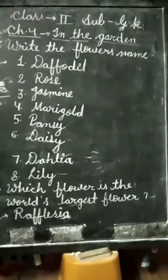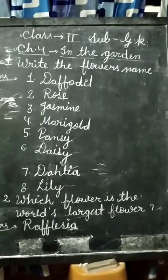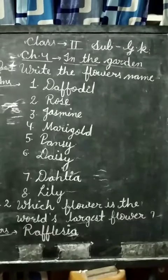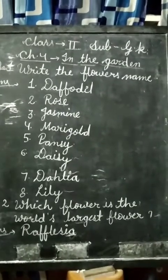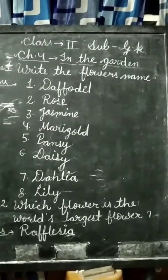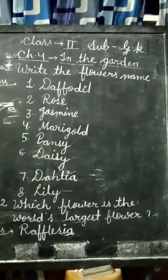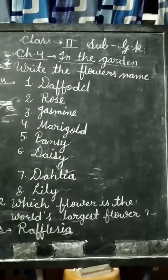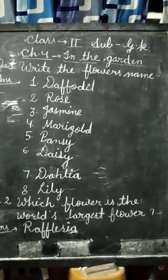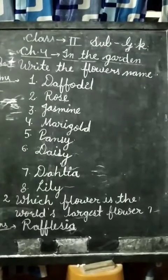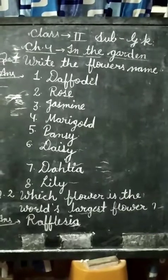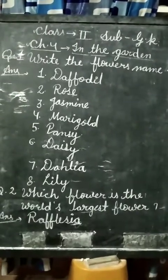I repeat the first question: Write the flowers' names. First: Daffodil. Second: Rose. Third: Jasmine. Fourth: Marigold. Fifth: Pansy. Sixth: Daisy. Seventh: Dahlia. Eighth: Lily.